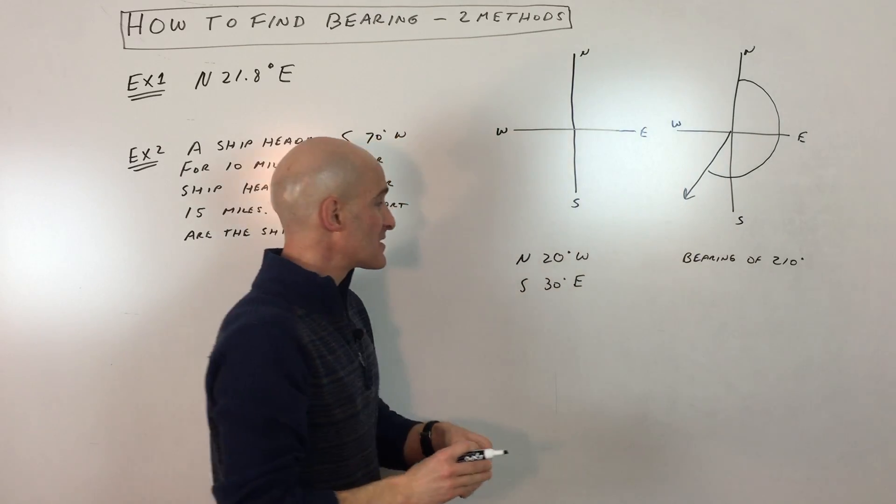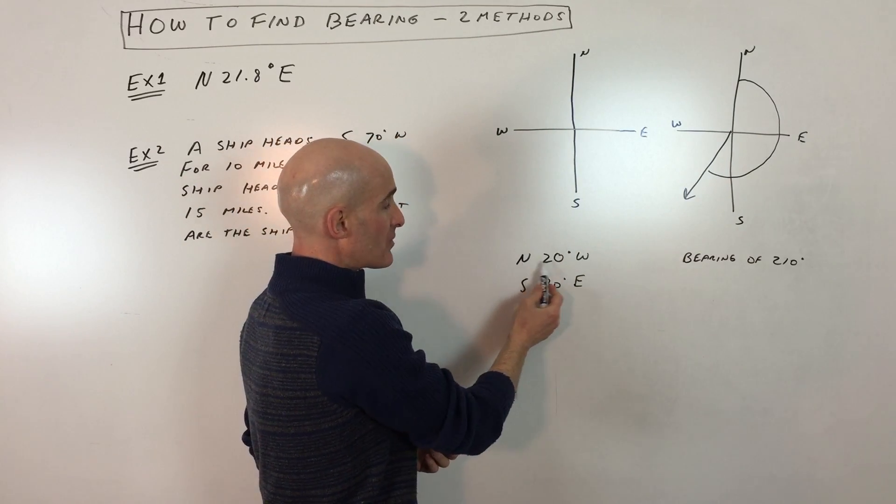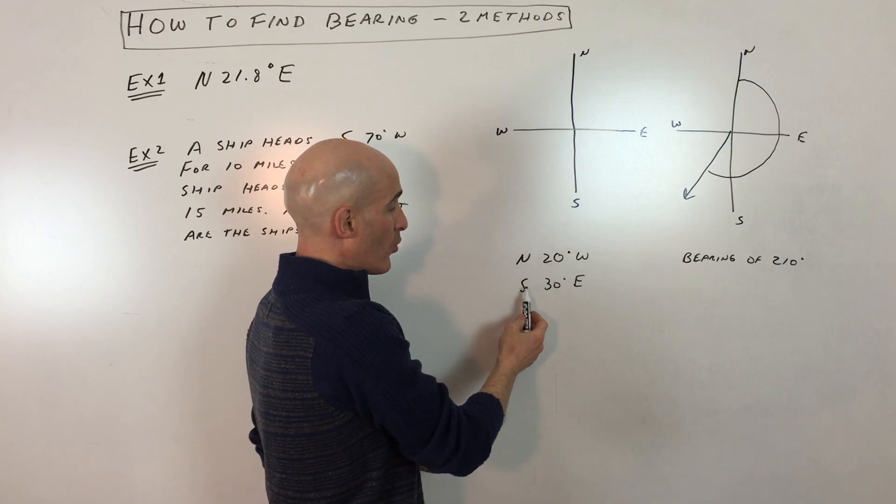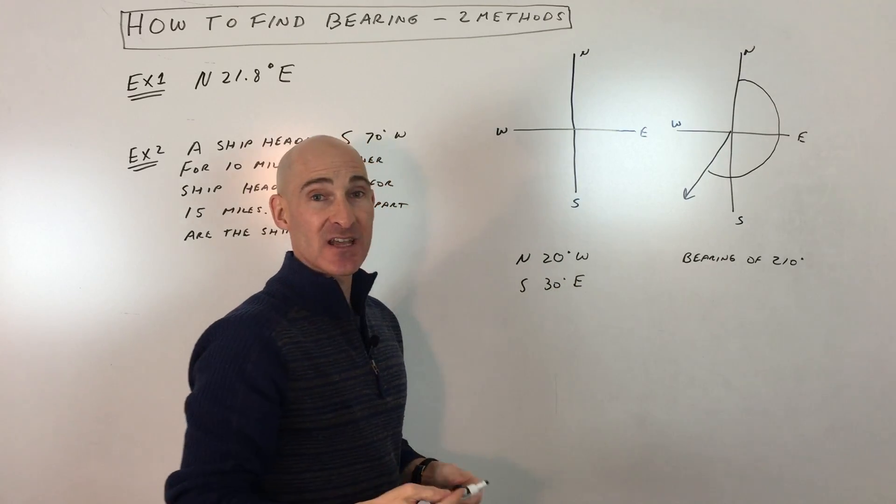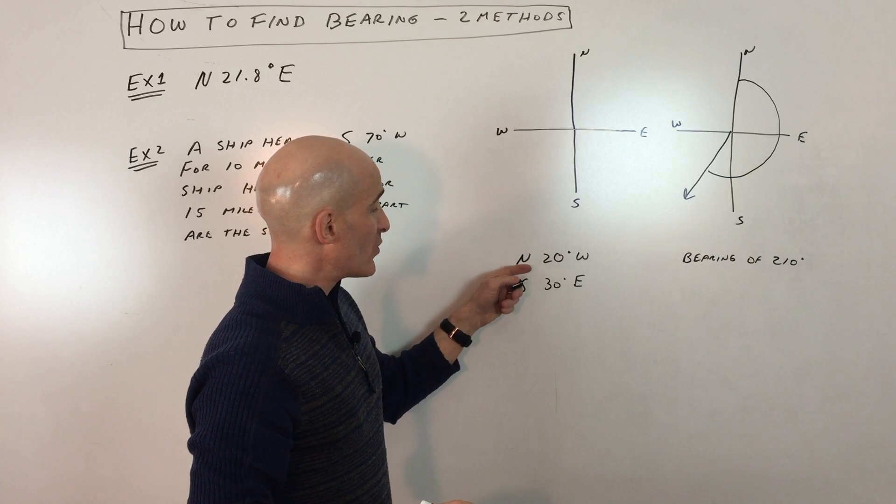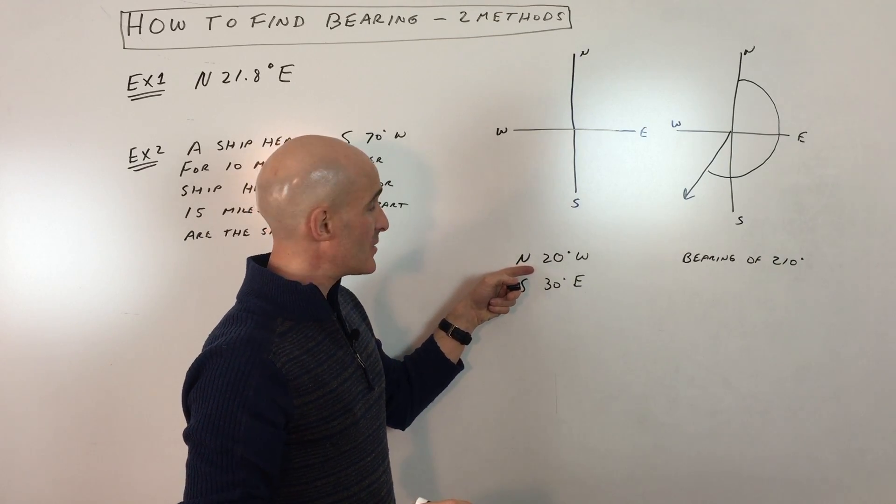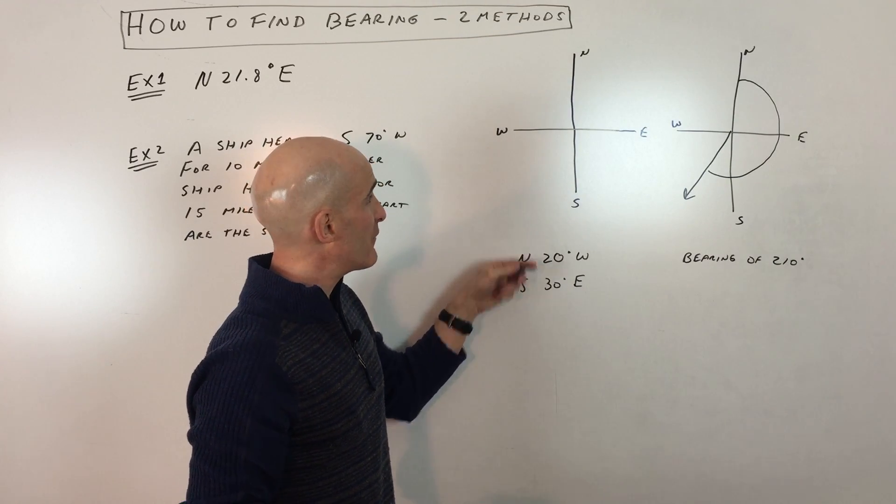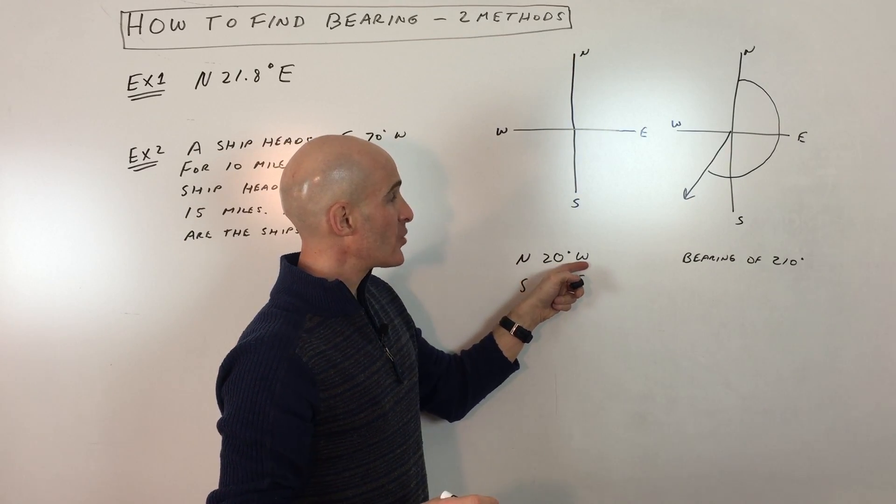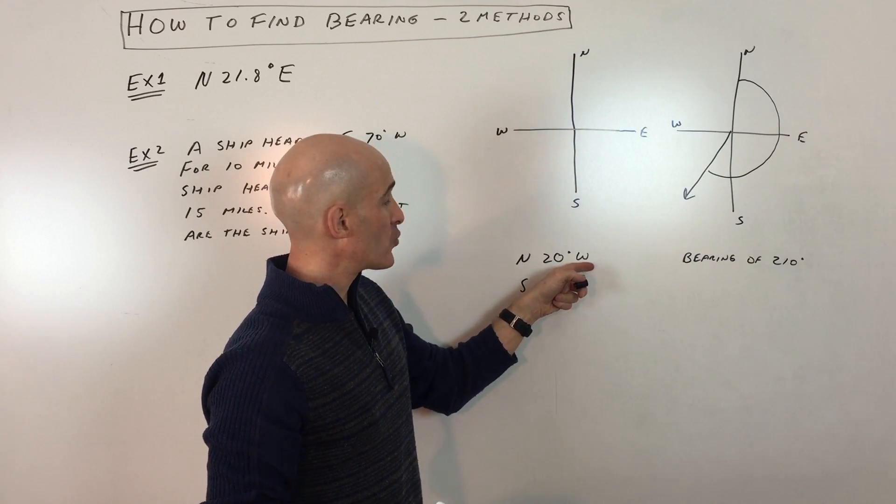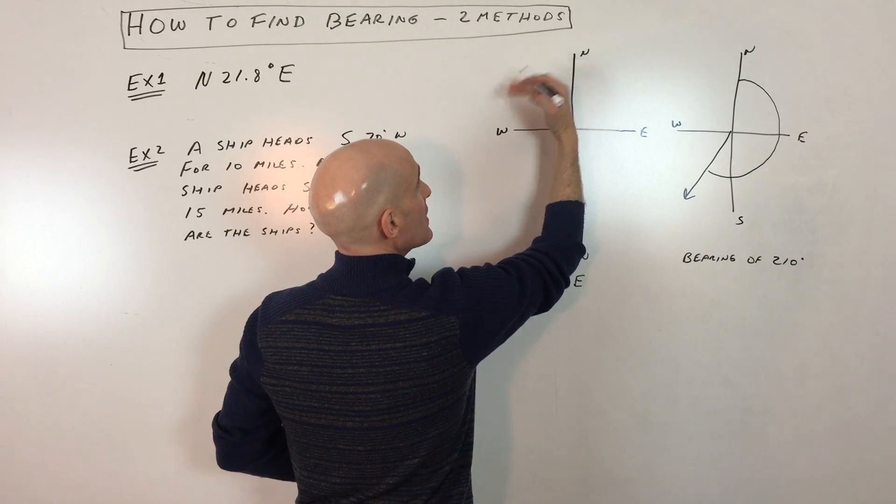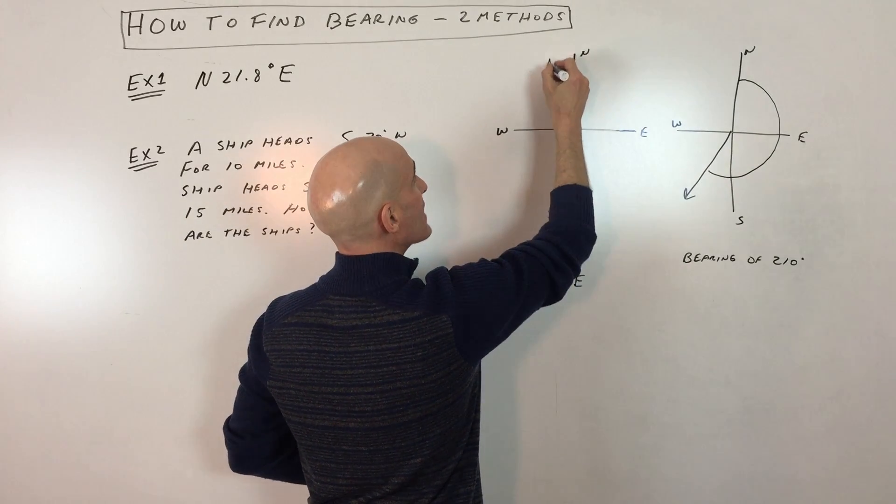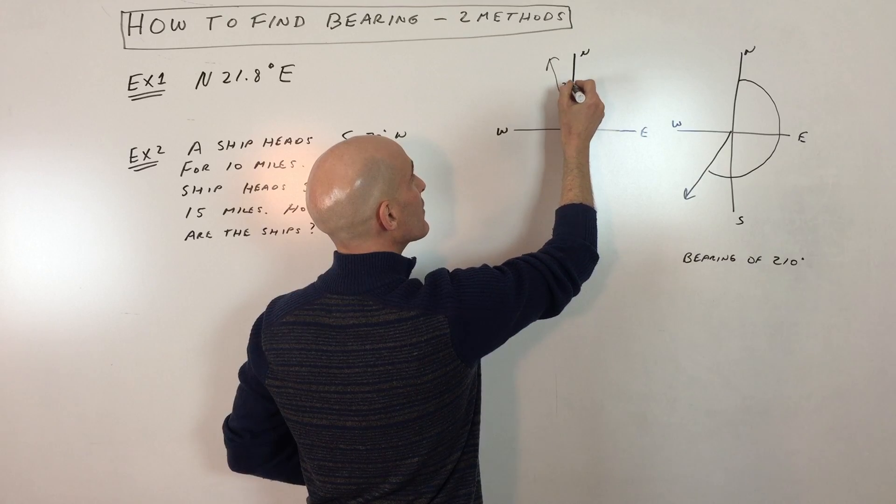Now, another way is they'll give you some other coordinates. They'll say north 20 degrees west or south 30 degrees east. When they give it to you in this form, what you want to do is you want to start facing in the direction of that first letter. So you'd say, I'm going to face north and I'm going to start to turn 20 degrees towards the second letter, towards the west. So I'm facing north 20 degrees towards the west. That's our angle right there, 20 degrees.